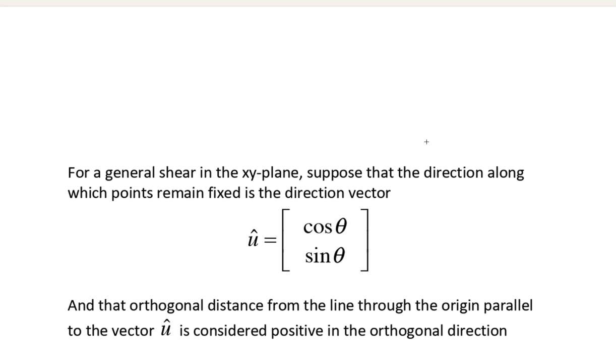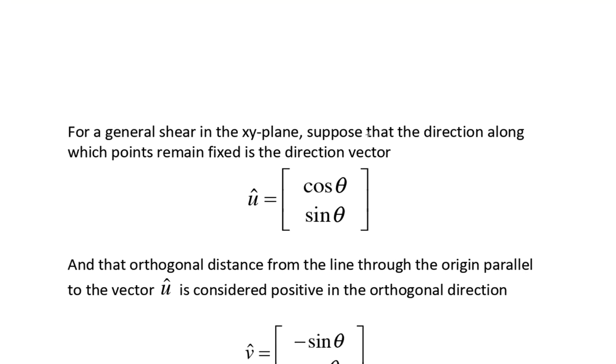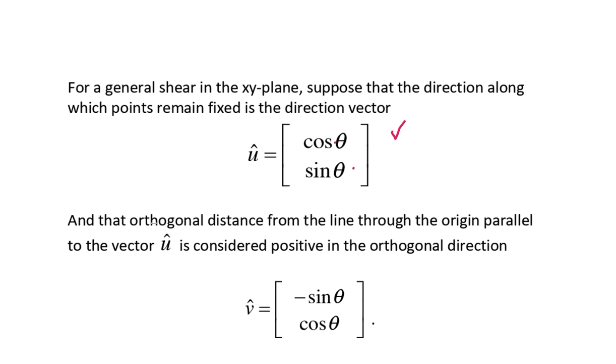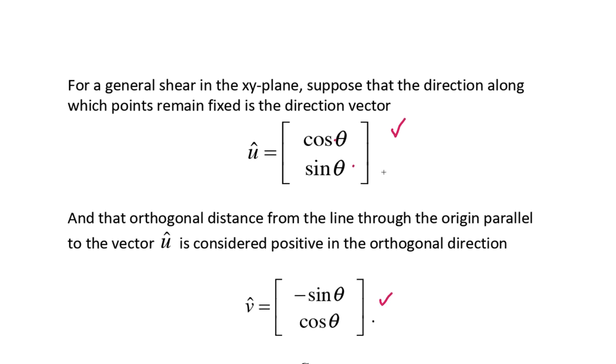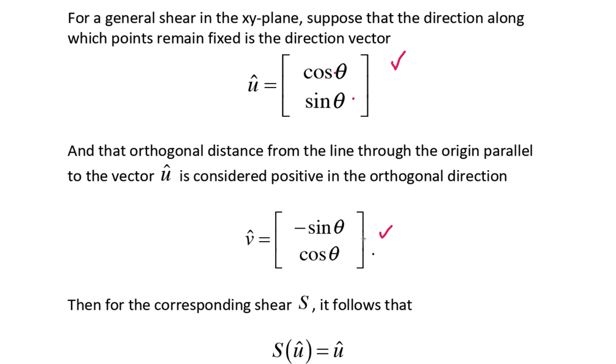Let's talk about a general shear in the x-y plane. Suppose that the direction along which points remain fixed is along this direction. Now, in my original, I had u is 1, 0. I just had i. Now, I'm going to assume that orthogonal distance from the line through the origin parallel to this vector is considered positive in this orthogonal direction. So this is sort of naturally what you'd get here if I took the u vector and rotated it at pi over 2 radians. So this would correspond to essentially j in the case where theta is 0. These are orthogonal. In fact, they're orthonormal. These are orthonormal vectors, these two.